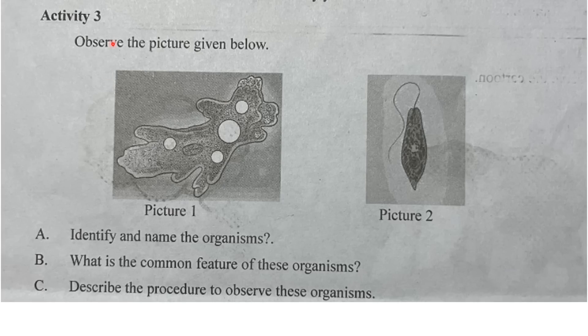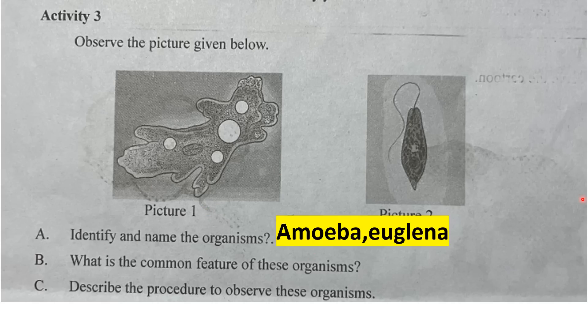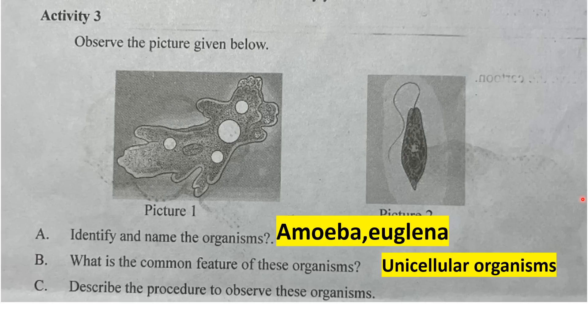Activity 3: Observe the picture given below. Identify and name the organism — Amoeba and Euglena. What is the common feature of these organisms? They are unicellular organisms. Describe the procedure to observe these organisms.